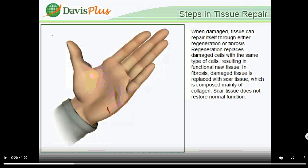Tissue repair is always a balance between regeneration — where tissue like epithelium comes back to normal — and fibrosis, where scar tissue fills the gap. There's always some combination of both depending on the injury, your health, and other factors. Dense connective tissues like tendons and ligaments mostly heal by fibrosis, becoming less functional and less stretchy over time.